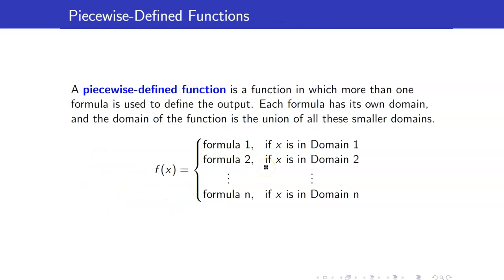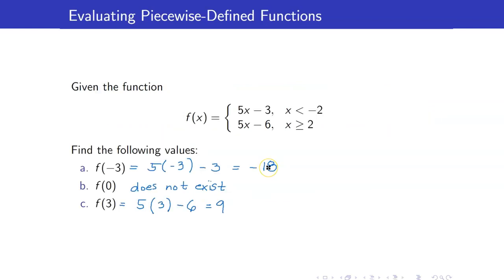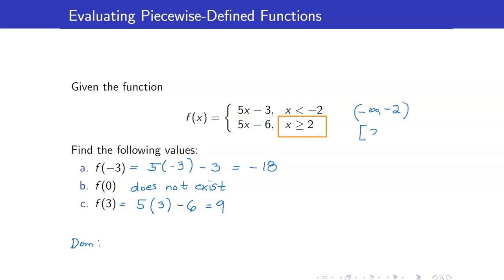From our definition, in a piecewise defined function, the domain is the union of the smaller domains. Going back to this function, the domain consists of the interval negative infinity to negative 2, union with the interval 2 to infinity. The domain of function f is the union of these two intervals.